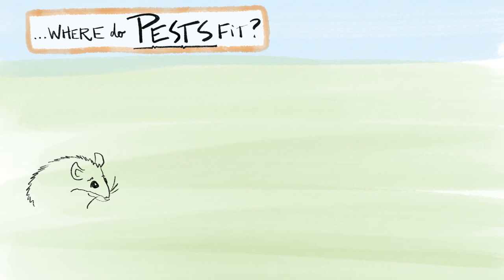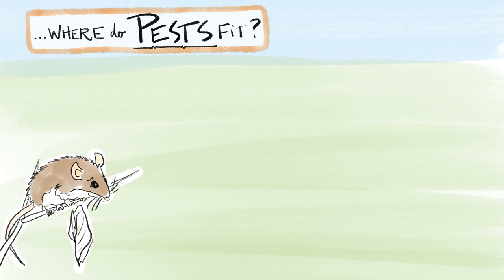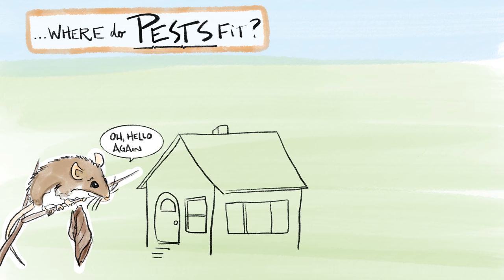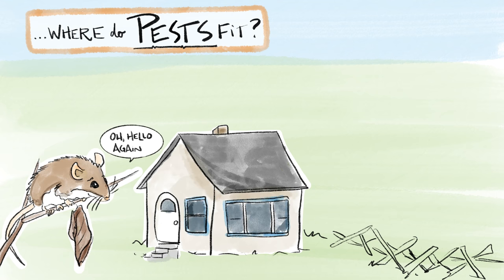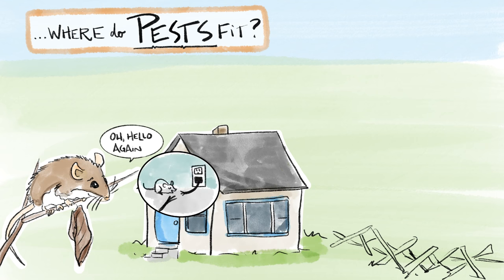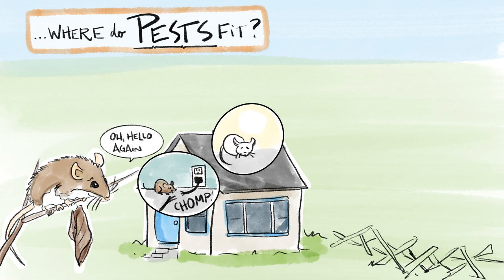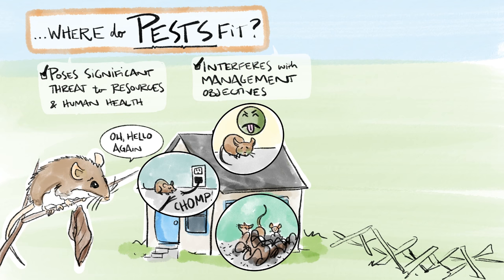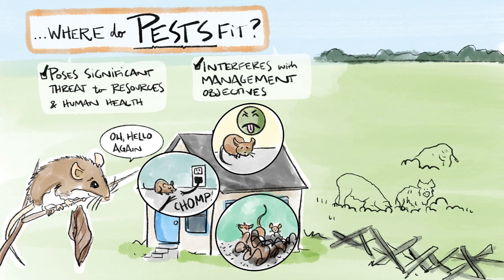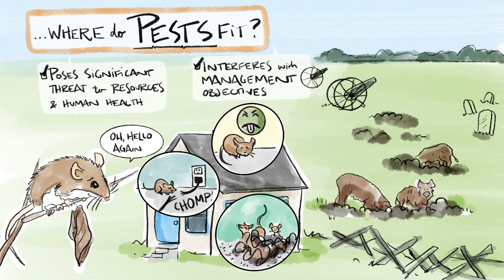Now you may be thinking, where do pests fit into all of this? Great question! Let's bring back our old friend the white-footed mouse. As we said earlier, the white-footed mouse is a native species throughout the eastern United States when found in nature. But when found in and around structures, the mouse poses significant threats to resources and human health, and it's considered to be a pest. A pest is any organism that interferes with management objectives or threatens human health or safety. A pest can be native or non-native. All invasive species are pests, but not all pests are invasive species.